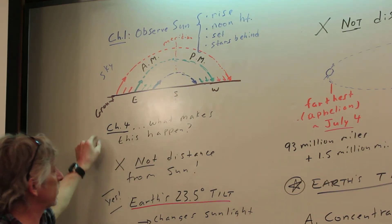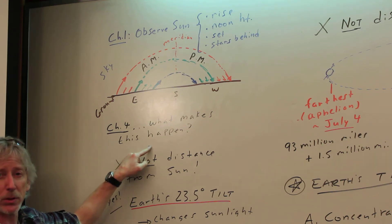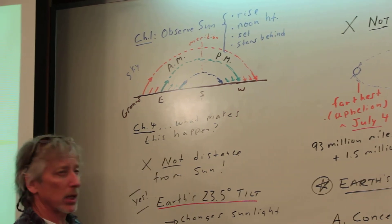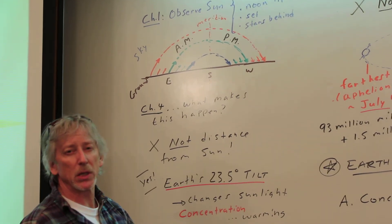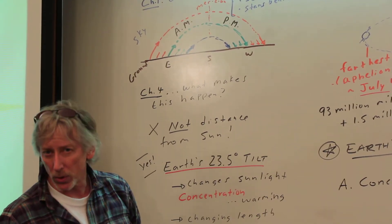That's what we knew. What we want to do in chapter four: what makes that happen? And if you ask a lot of people, they'll say it must be the distance from the Sun. I mean, in summer we must be closer. That's not correct.